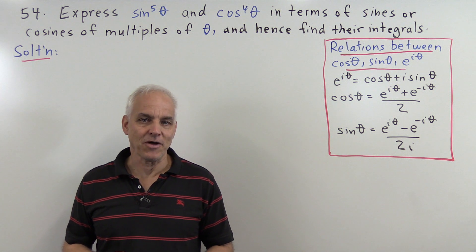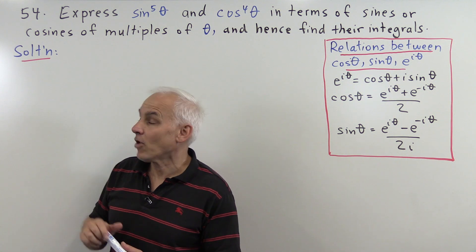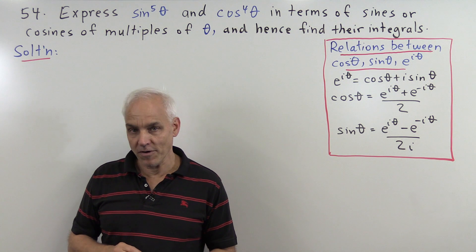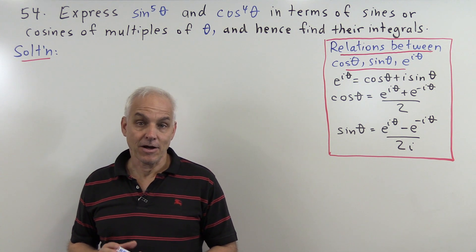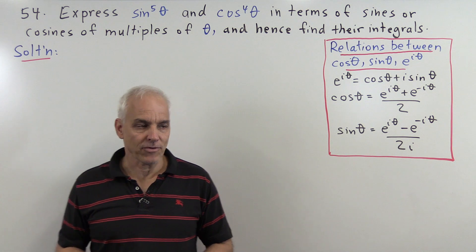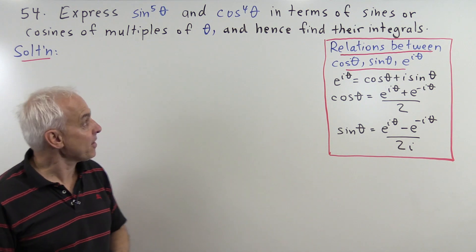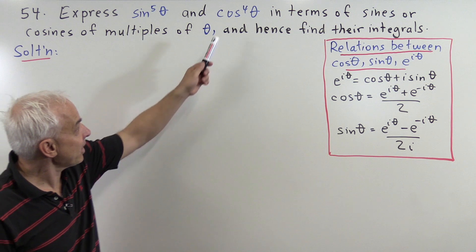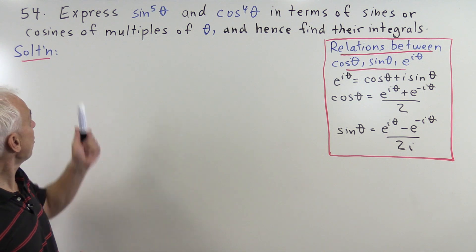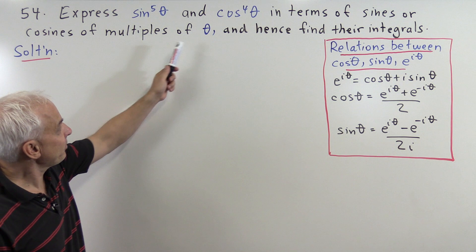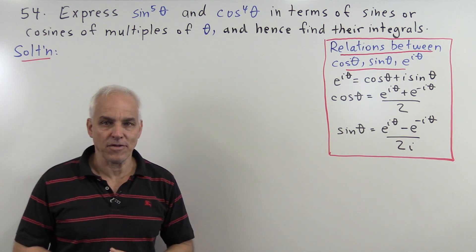Hello, we're at the University of New South Wales and I'm Norman Wildberger. This is problem 54 from chapter 3 of the Linear Algebra First Year Notes on complex numbers. We're asked to express sine to the fifth of theta and cosine to the fourth of theta in terms of sines or cosines of multiples of theta and hence find their integrals.